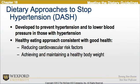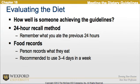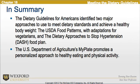The dietary approaches to stop hypertension was developed to prevent hypertension and lower blood pressure in those with hypertension. The healthy eating approach is consistent with good health, will reduce cardiovascular risk factors, and help achieve and maintain a healthy body weight. Evaluating a diet involves a 24-hour recall method and food records, recommending three to four days per week. The dietary guidelines identified two major approaches: the USDA food patterns and the DASH eating plan. The USDA's MyPlate promotes a personalized approach to healthy eating and physical activity.